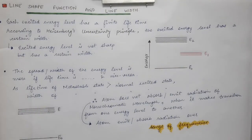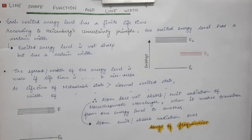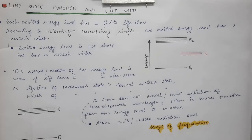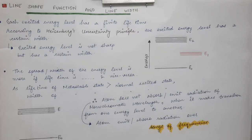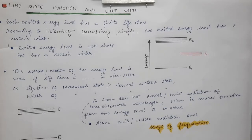In this lecture we are going to discuss line shape and line width. This topic is general and not specifically related to lasers. Every excited state has a certain lifetime. The normal excited state has a lifetime of about 10⁻⁸ seconds, and the metastable state has a lifetime of the order of 10⁻³ seconds, so the lifetime of the metastable state is greater than that of the normal excited state.